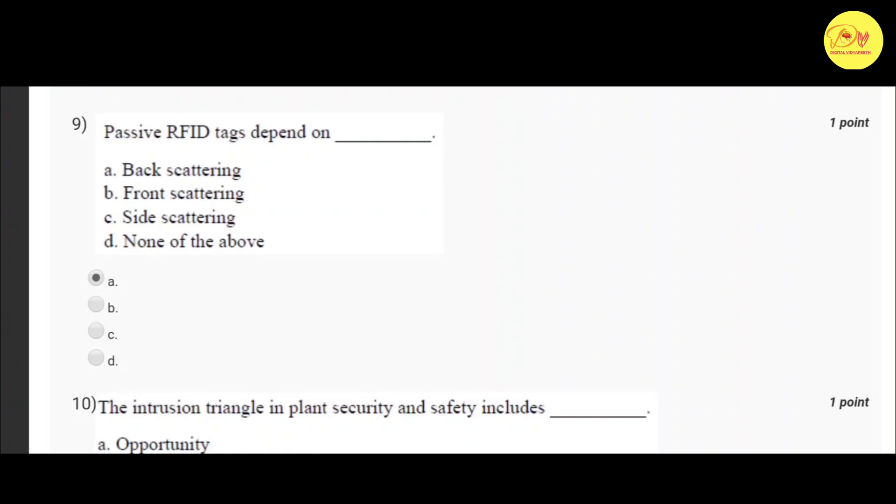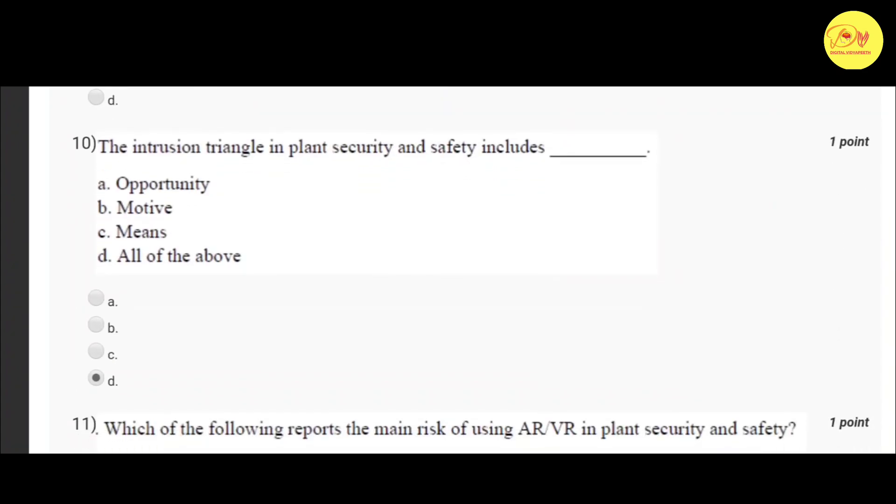Our ninth question is: Passive RFID tags depend on? Correct option is A, backscattering. Our tenth question is: The intrusion triangle in plant security and safety includes? Correct option is D, all of the above - opportunity, motive, means.